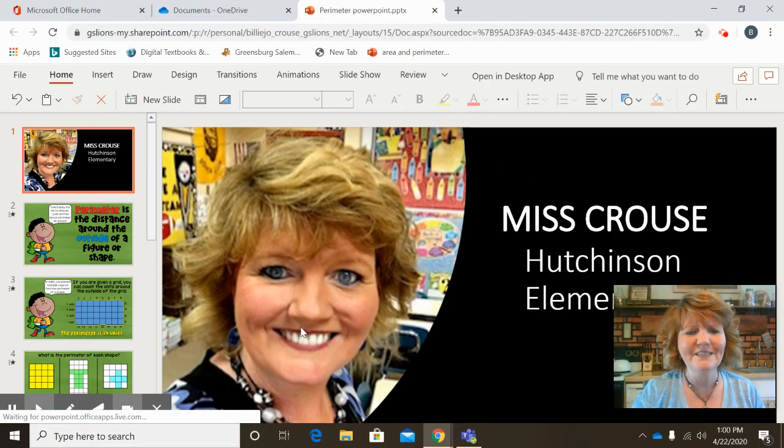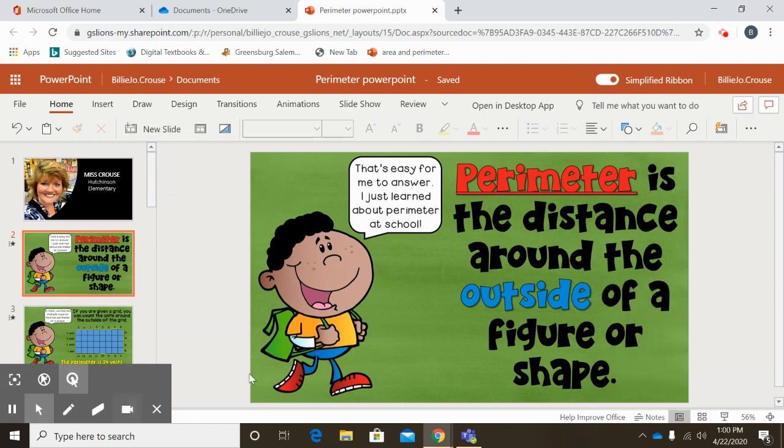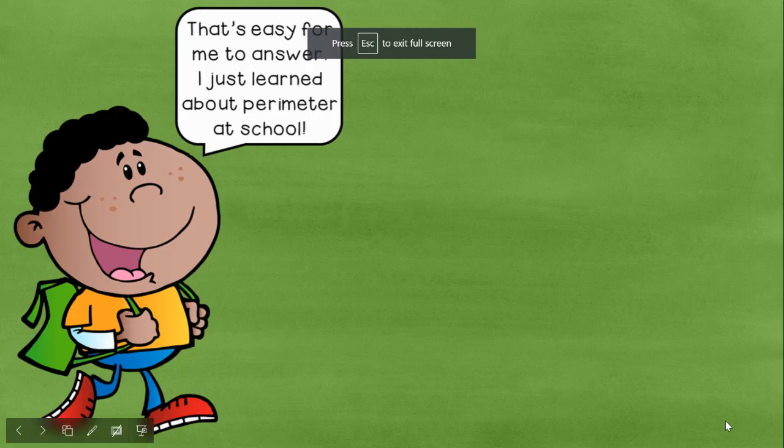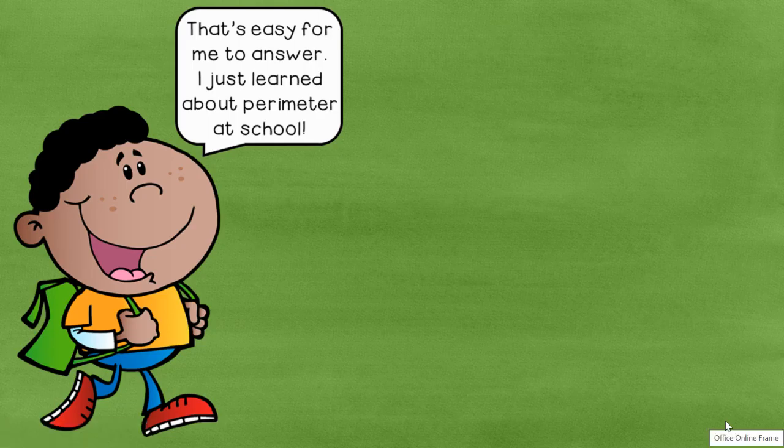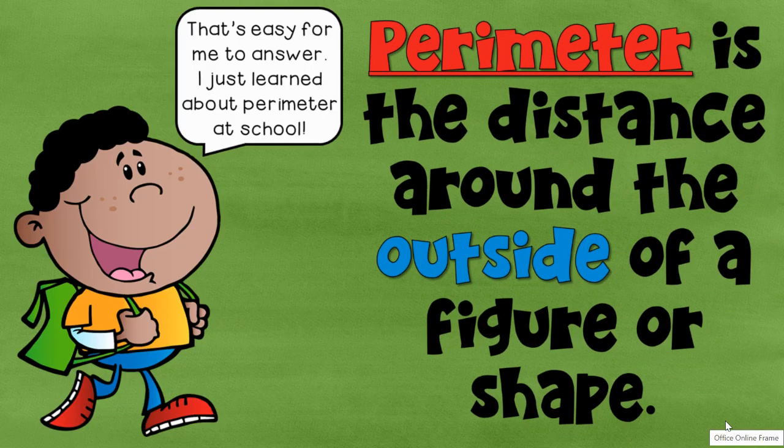my hope is that you would be able to say, oh Ms. Krause, come on, that's easy peasy, lemon squeezy. We just learned about that yesterday. And that you would tell me the perimeter is the distance around the outside of a shape. And if you did, good job.